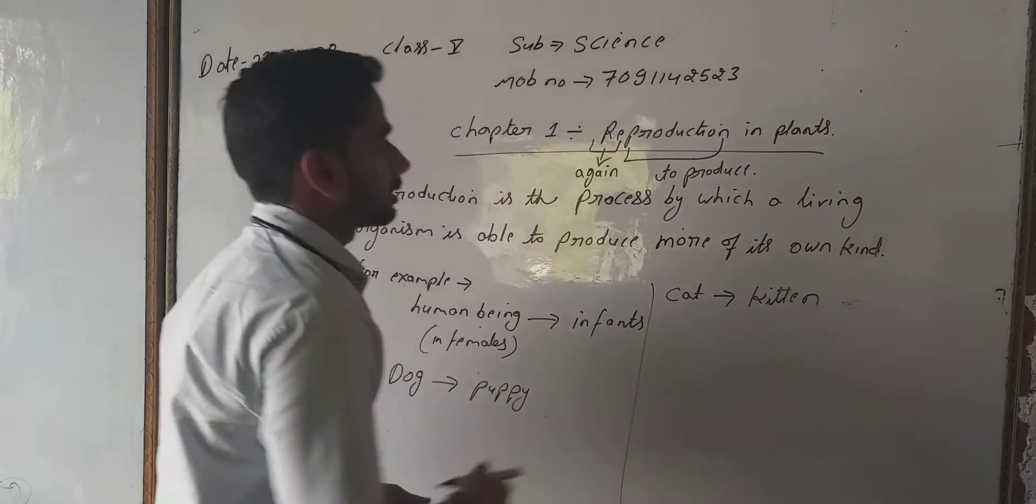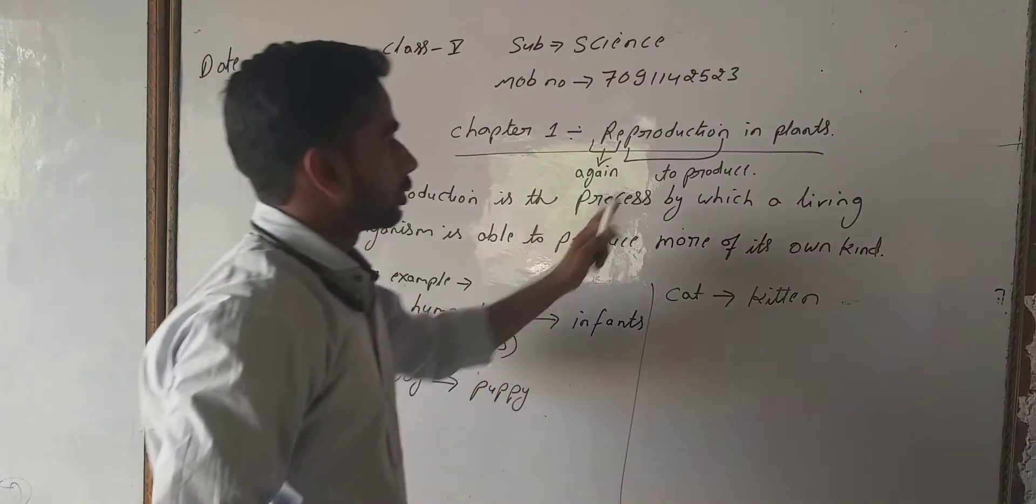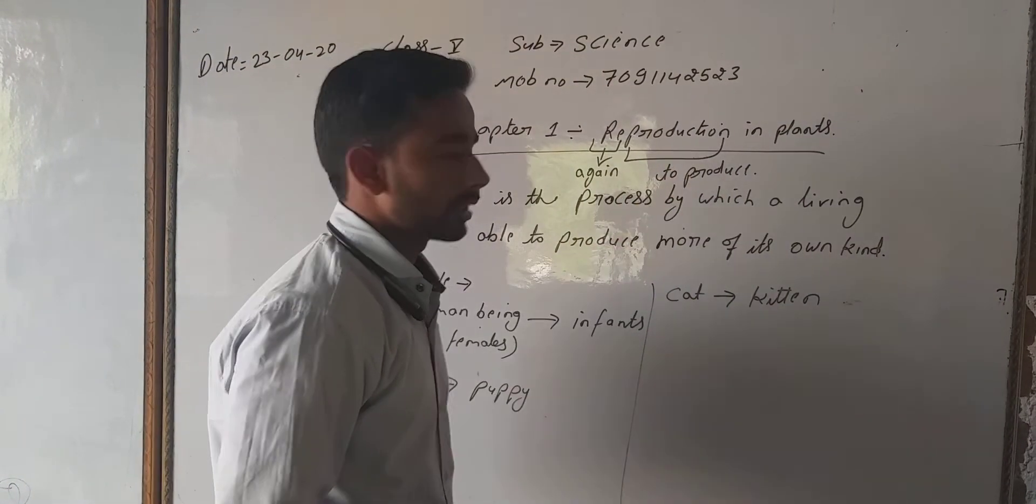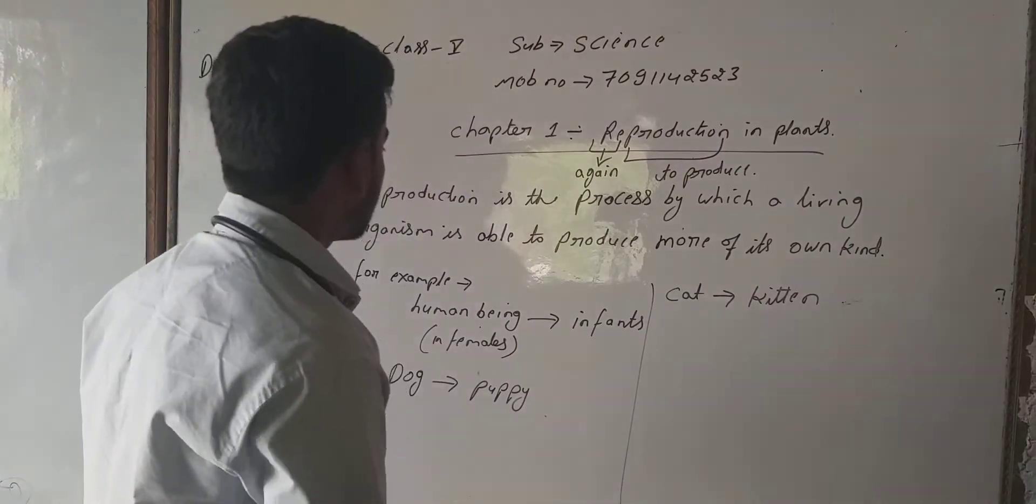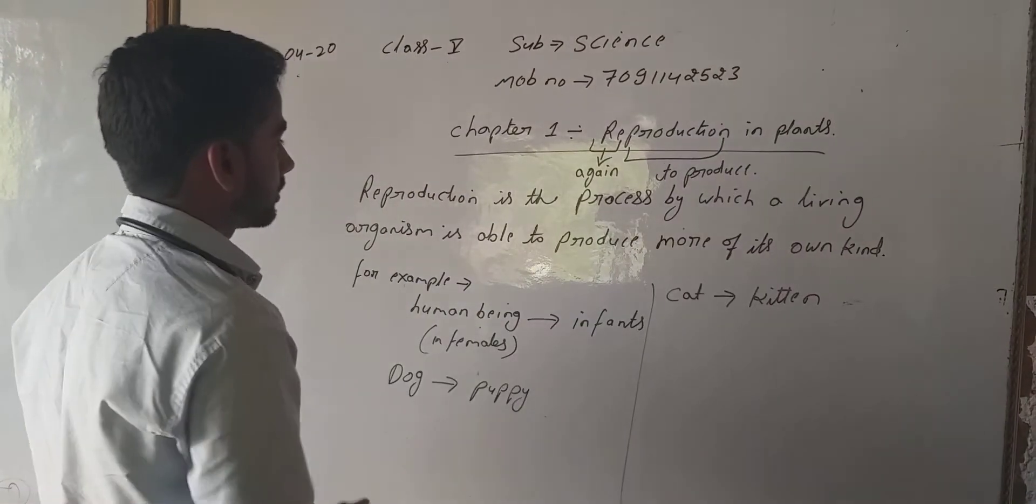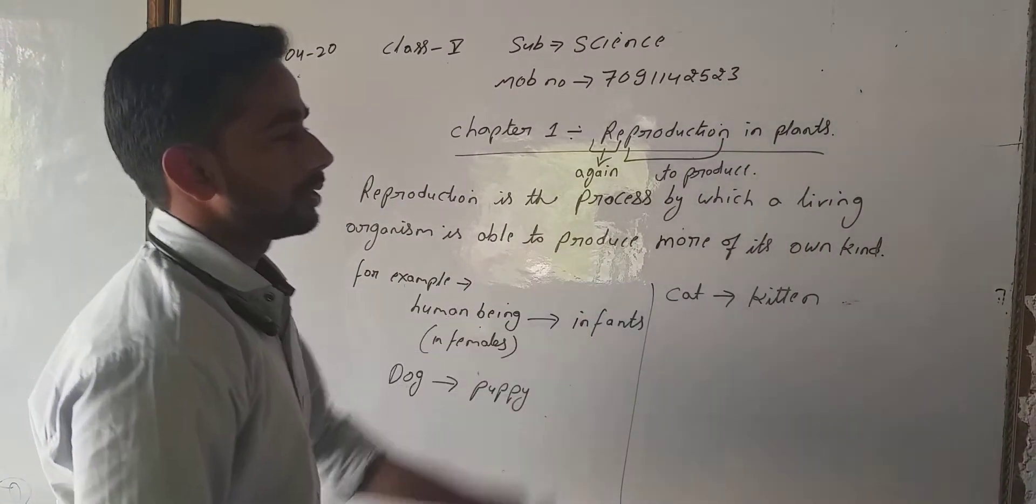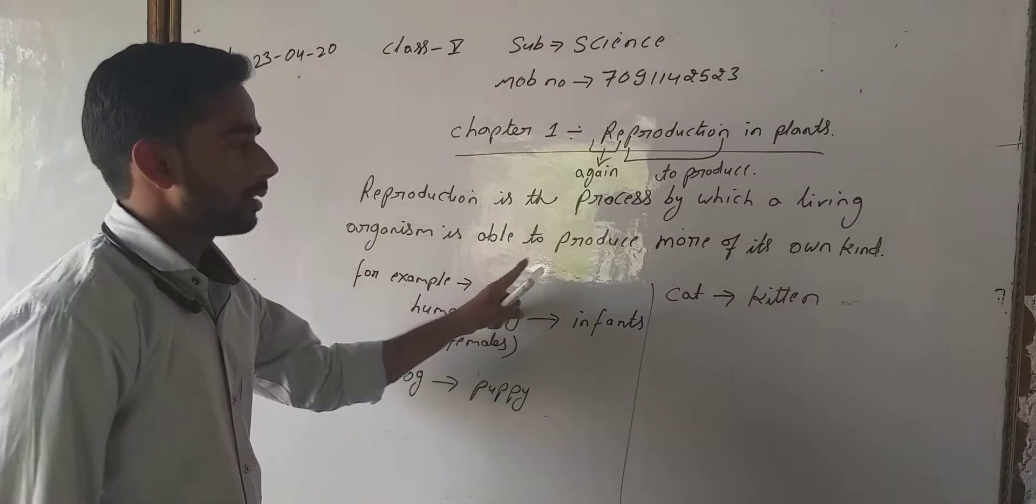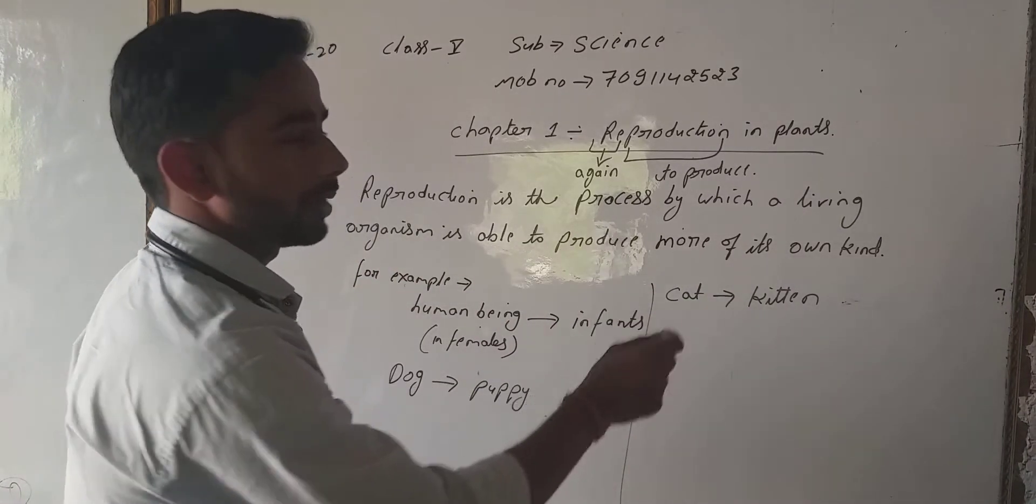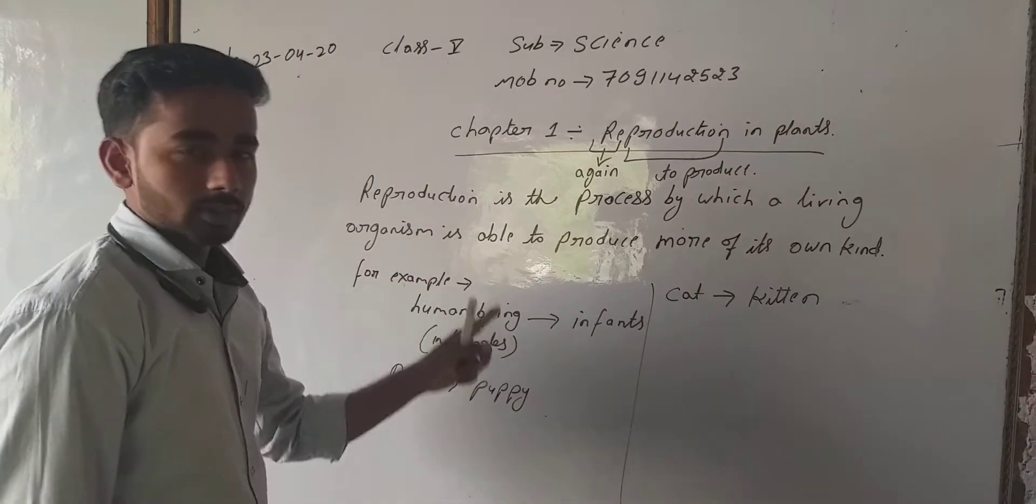That means reproduction means to produce again and again. Here is the definition: reproduction is a process by which a living organism is able to produce more of its own kind.